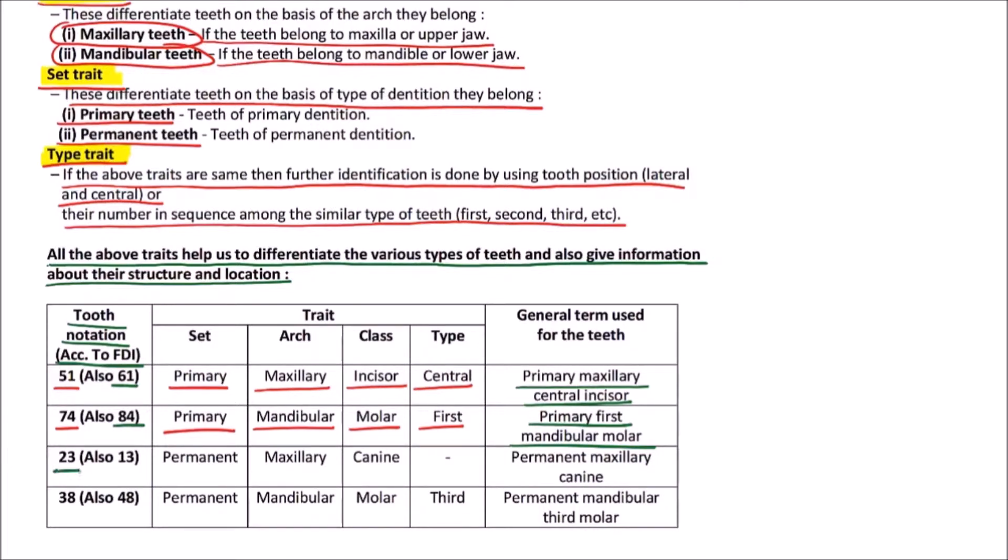Next is 23: the set is permanent, arch is maxillary, class is canine. There is no type because canine is single in one quadrant, so it will be termed as permanent maxillary canine. It is also applicable for 13.